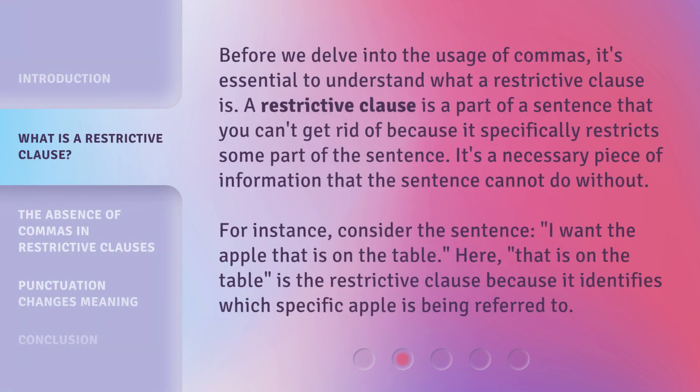Before we delve into the usage of commas, it's essential to understand what a restrictive clause is. A restrictive clause is a part of a sentence that you can't get rid of because it specifically restricts some part of the sentence. It's a necessary piece of information that the sentence cannot do without. For instance, consider the sentence: 'I want the apple that is on the table.' Here, 'that is on the table' is the restrictive clause because it identifies which specific apple is being referred to.